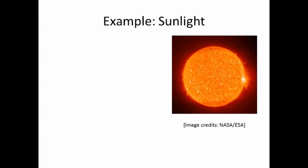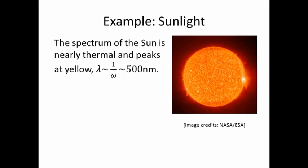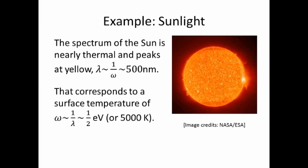Now let's look at a simple example: sunlight. The spectrum of our sun is nearly thermal and peaks at yellow at a wavelength of about 500 nanometers. A wavelength is the inverse of a frequency. That corresponds to a surface temperature of about one half electron volt at 500 Kelvin.